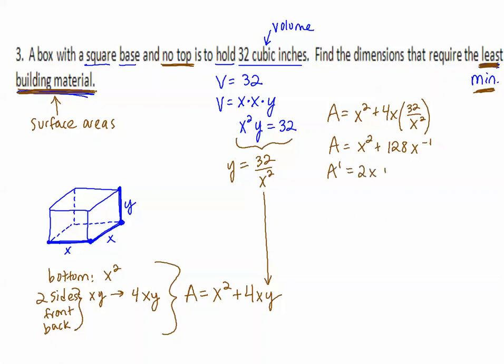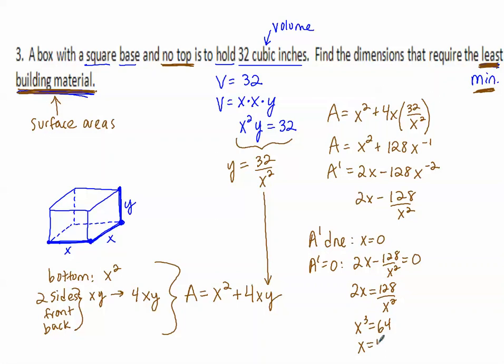Where the derivative doesn't exist is where X is zero. Where A prime equals zero is where 2X minus 128 over X squared equals zero. If we solve this, multiply by X squared and divide by two, and we get X cubed equals 64, so X equals 4. So we have two critical numbers. However, does it make sense to say X equals zero, the length and width of the box equals zero? No, it doesn't. So we're not going to use that number. That means X equals 4 has to be the value where we have a minimum.